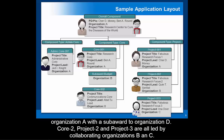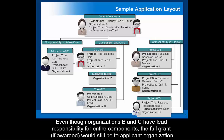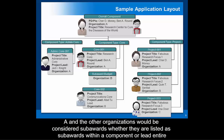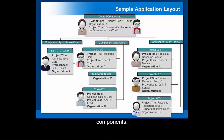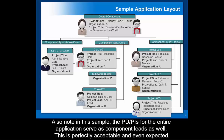Core 1 is led by organization A with a sub-award to organization D. Core 2, project 2, and project 3 are all led by collaborating organizations B and C. Even though organizations B and C have lead responsibility for entire components, the full grant, if awarded, would still be to the applicant organization A, and the other organizations would be considered sub-awards, whether listed as sub-awards within a component or leading entire components. Also note that the PDPIs for the entire application may serve as component leads as well, which is perfectly acceptable and even expected.